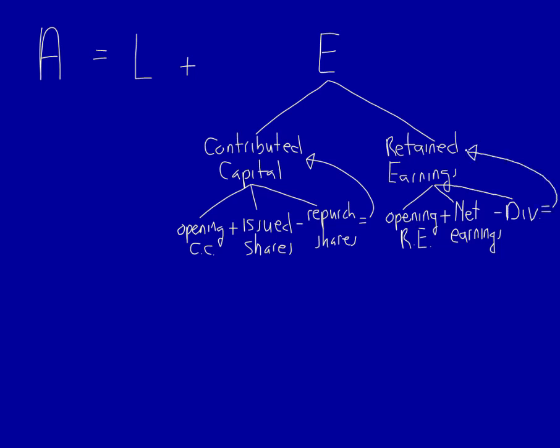We still haven't gotten to revenue and expenses. Net earnings is made up of revenue minus expenses. Revenue is the income that the business has earned in the current period by either providing a service or delivering a good. Expenses are the resources that have been used, consumed, or incurred to help generate revenue — used such as a truck to deliver your goods, consumed such as supplies used to generate revenue, or incurred such as interest from a loan.